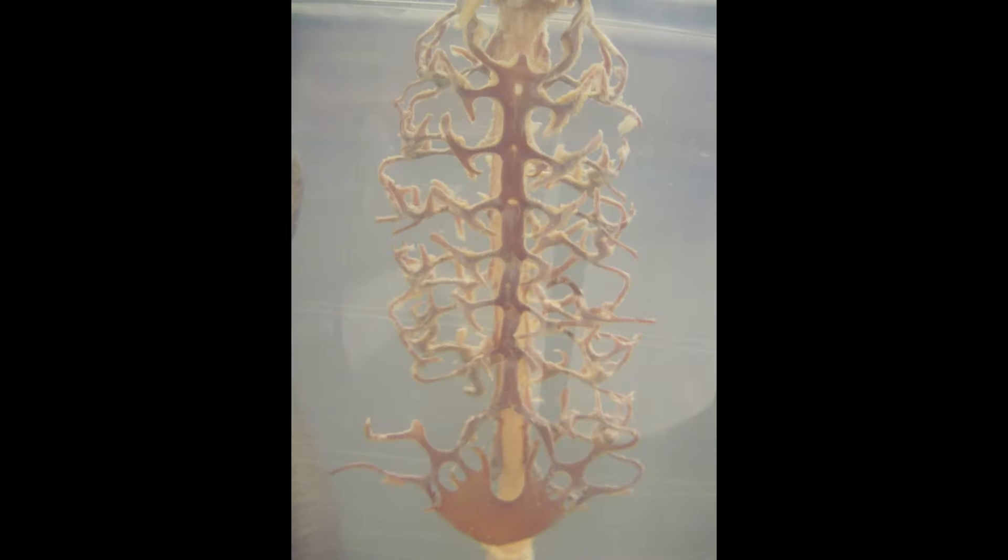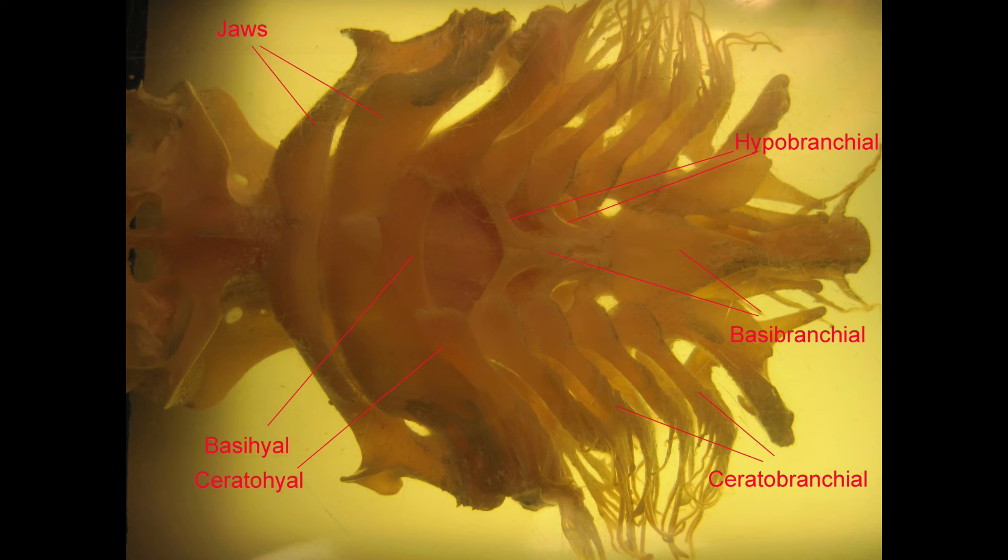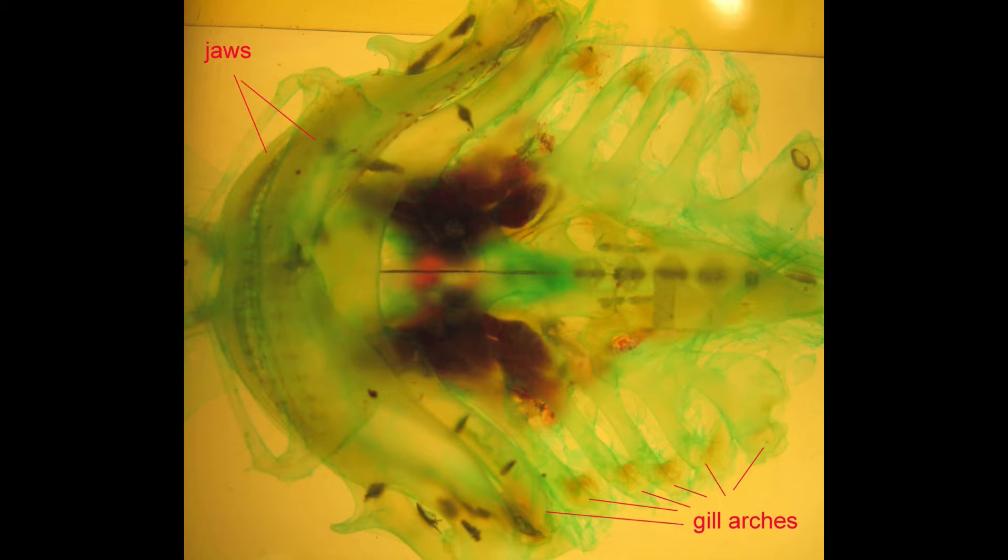As you can observe here in the lamprey and in the shark, cartilage bars support these pharyngeal arches where the internal gills are located in fish.